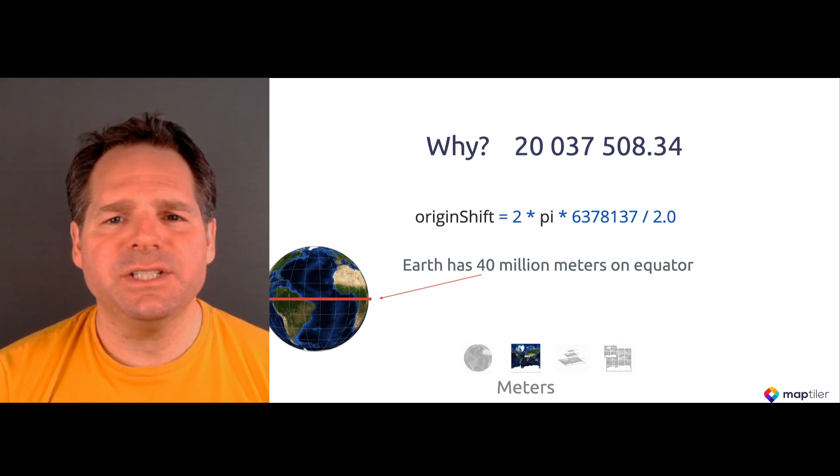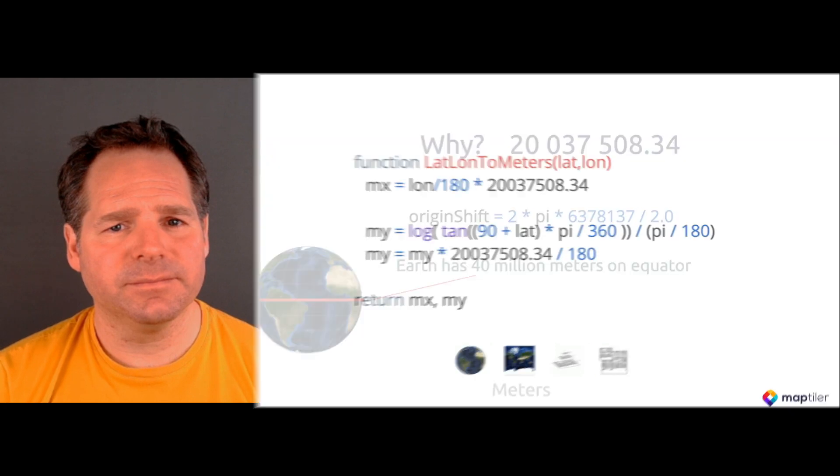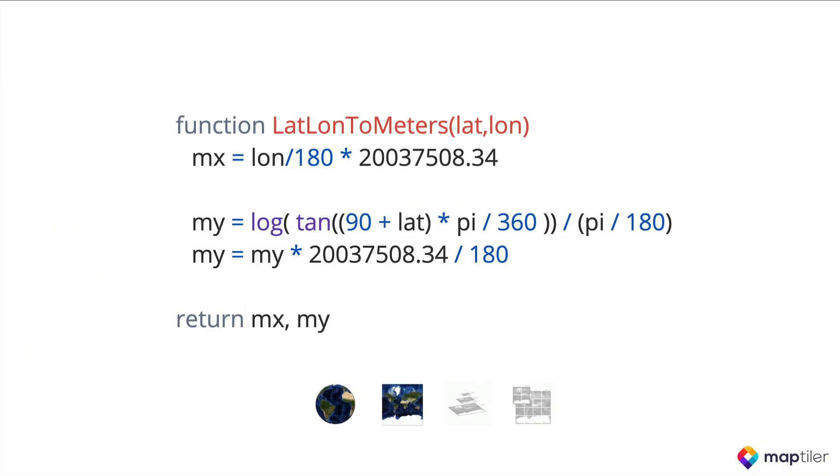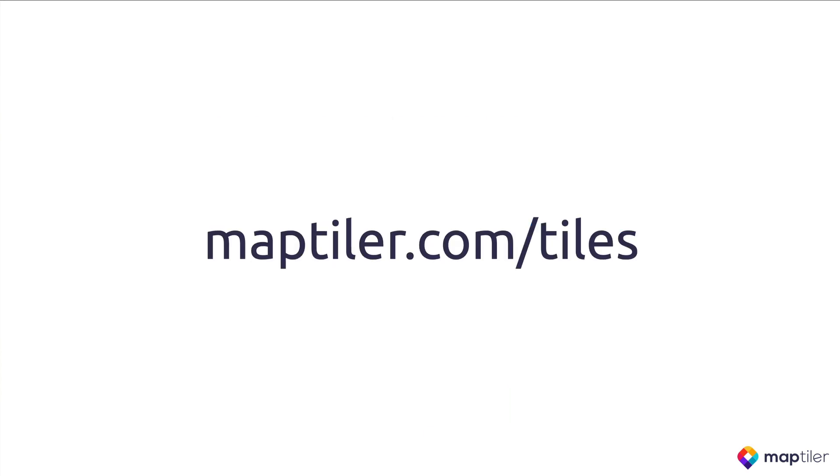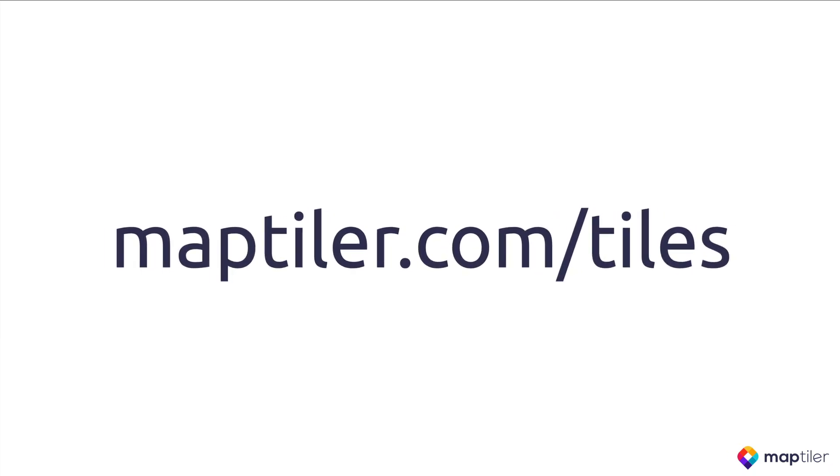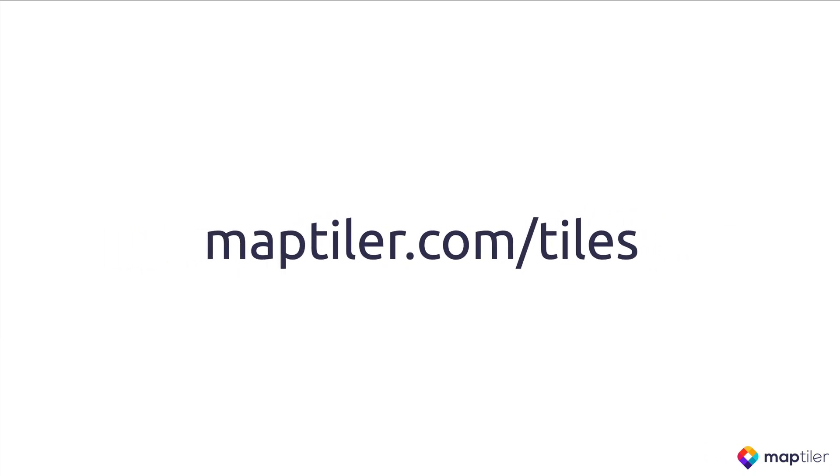So how can we convert latitude and longitude to metres? We know that the maximum values in latitude and longitude are 180 and 90, and we know that there are around about 20 million metres, so we can use the functions shown here to convert from one system to the other. These functions are available from maptiler.com/tiles in a range of different programming languages.